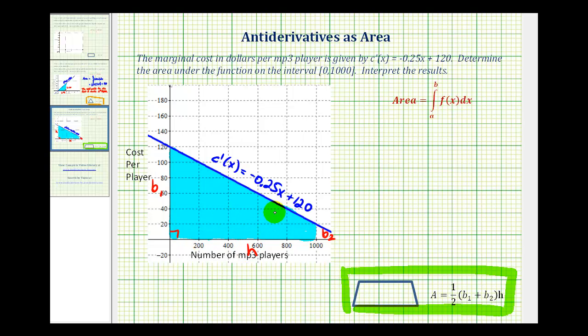And because this function is continuous and non-negative on this interval, we can represent the area as a definite integral. The area would be equal to the integral on the interval from zero to 1,000 of our marginal cost function integrated with respect to x. But now we'll determine this area using our geometric formula.